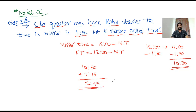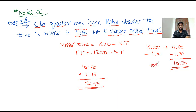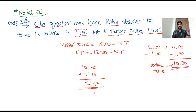Adding two hours and 15 minutes to 10:30 gives 12:45. So the present actual time is 12:45. The question was: two hours quarter minutes back Rahul observes the time in the mirror as 1:30 — find two hours 15 minutes back normal time (10:30), then add two hours 15 minutes to get 12:45. Thank you very much.